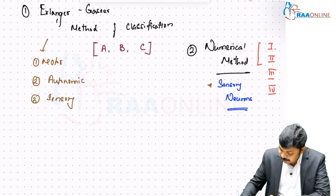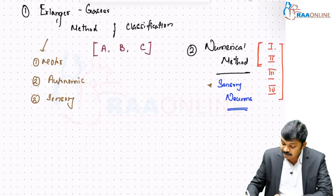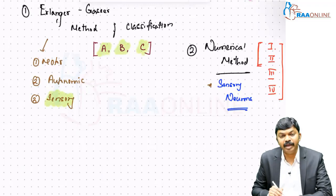Sensory neurons alone are being categorized into 4 varieties - type 1, 2, 3 and 4 - by numerical method. But by Erlanger-Gaser method, even though it is a sensory neuron, it is getting categorized into just 3 varieties: A, B and C.